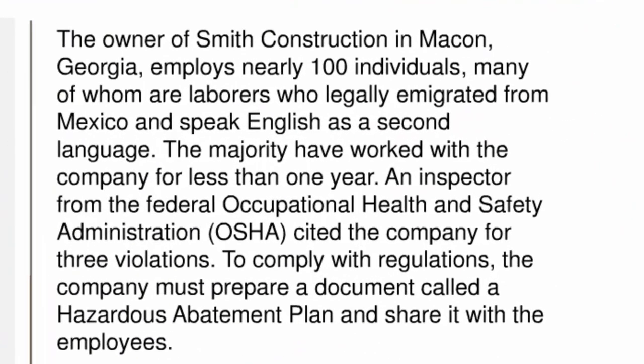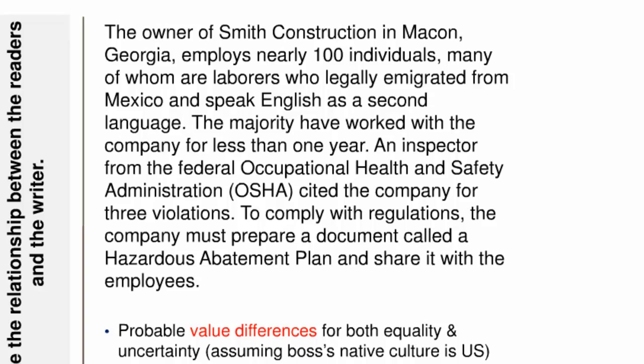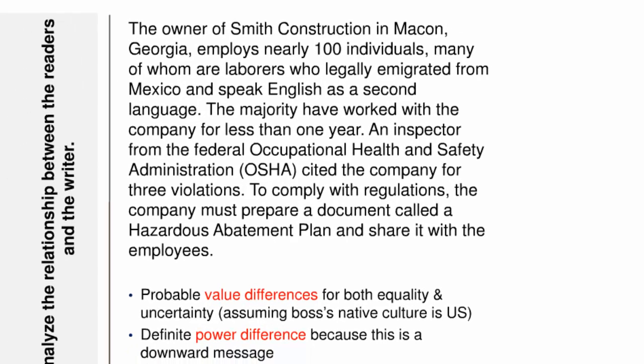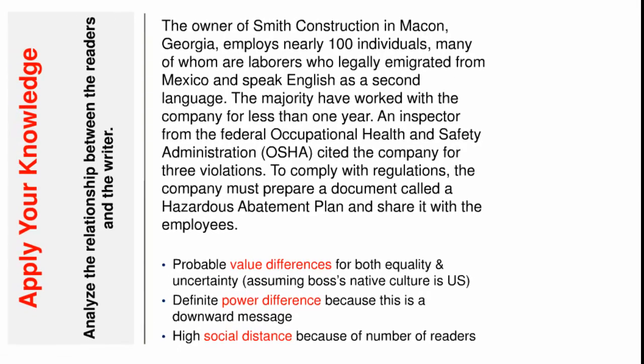Now let's check your understanding of the writer-reader relationship by analyzing the context of the notice. Regarding value differences, if we assume Smith is a US native, we can predict he values equality more than his employees do, and values certainty less than they do. Regarding power difference, this is a downward message because Smith is higher in the organizational hierarchy — which takes on more importance since many readers likely value power difference more than Smith does. Finally, regarding social distance, this situation involves relatively high social distance because it would be unusual, maybe even impossible, to be close to all 100 of your employees.